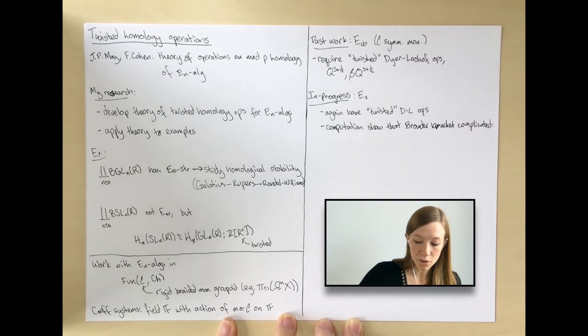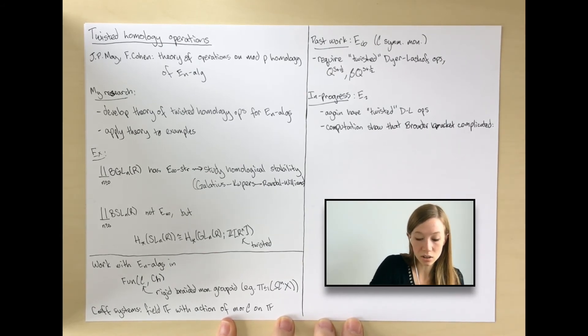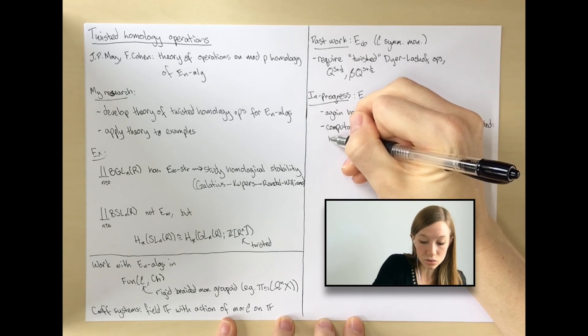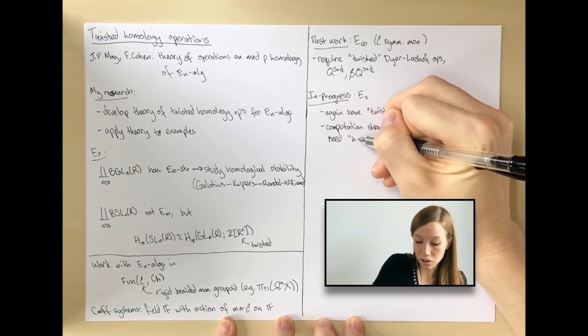In particular, in some cases, there are no binary operations, no non-zero binary operations that could take the place of the Browder bracket. But instead, you do have some higher arity operations.